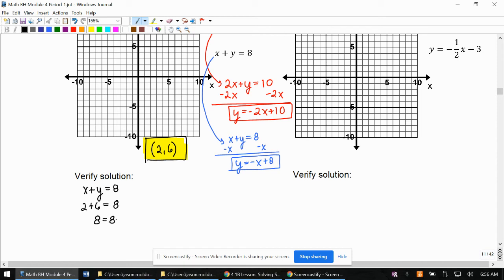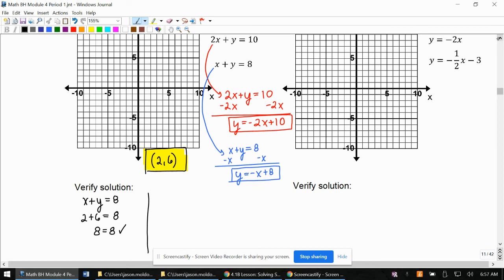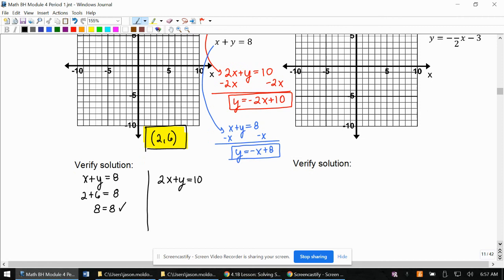Because if we made an error, the potential spots where our error could be is in our converting or in our graphing. And then we're going to do the same thing with the other one. And like in the other slide, it mentioned that just because it checks out in one, it could still fail for the other.